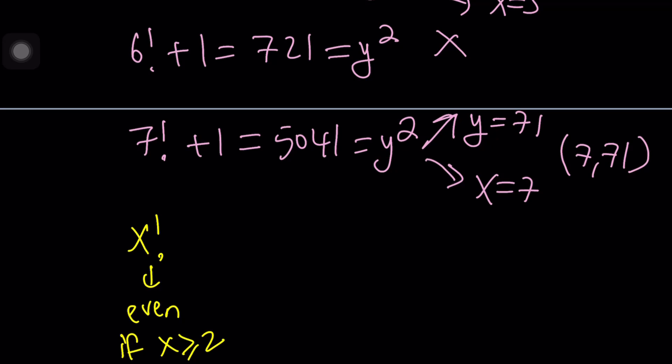In this case x equals 0 or 1 or 2 did not work. So I can safely say that x must be greater than or equal to, I can even say x is greater than 2. So x factorial is even, if you add 1 to it you get an odd number y squared is odd which means y is an odd number.